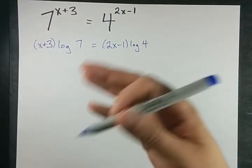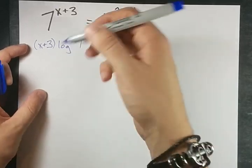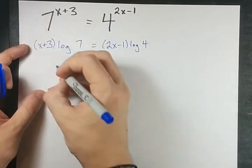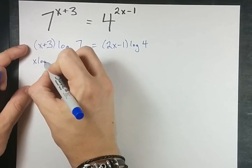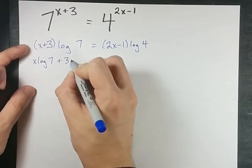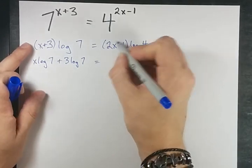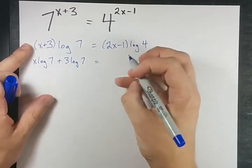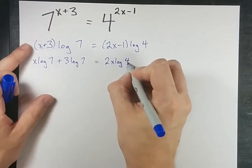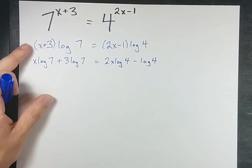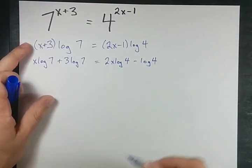This becomes you distributing, grade 9 stuff. Log 7 times x, log 7 times 3. You get x log 7 plus 3 log 7. Not bad. And here, you would distribute your log 4 through the brackets. That's 2x log 4 minus log 4. I'm not going to write the 1.